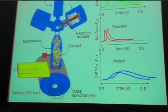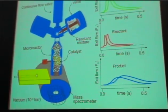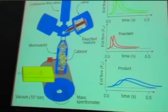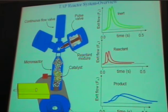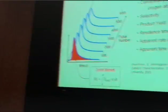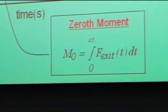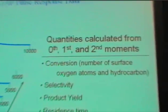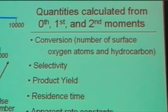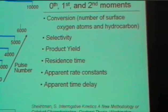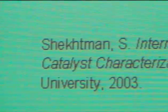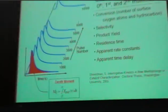Now, essentially, each one of these graphs is on the y-axis exit flow, and on the x-axis is time. And what we can do is, essentially, these are concentrations of that particular molecule at the exit of the reactor. So that's the idea. Now, for every one of these pulses, we can do some mathematics here and do some integration. And we can calculate a whole host of things using moment analysis, conversion being one of them. That's the one that I'm going to focus on today. But we can also do some other things like selectivity, product yield, residence time, apparent rate constants, and apparent time delay. But essentially, the main idea I want you to take away from this is that we use moment analysis. So we essentially integrate these curves.